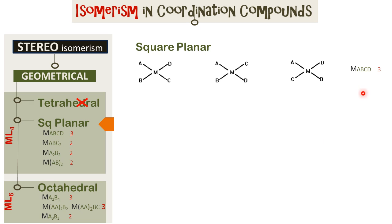The first type we look at is square planar complexes with the central metal ion surrounded by four different types of ligands A, B, C, D, and we have three possible isomers. So A and D are at 90 degrees to each other in one case, they are at 180 degrees in another, and A and B are at 180 degrees in the third. So we have three isomers here.